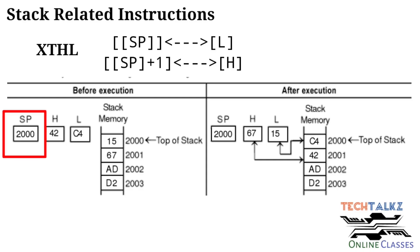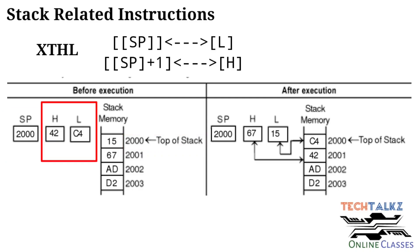Before execution: the stack pointer value is 2000. The stack pointer points to the top of the stack, which is address 2000. When the instruction executes, the L register content is exchanged with the content at address 2000, and the H register content is exchanged with the content at address 2001.